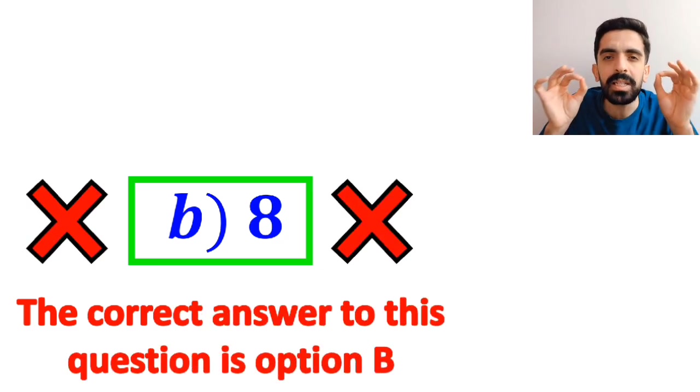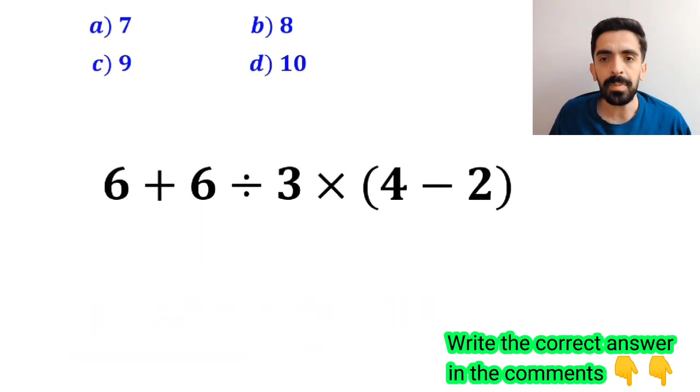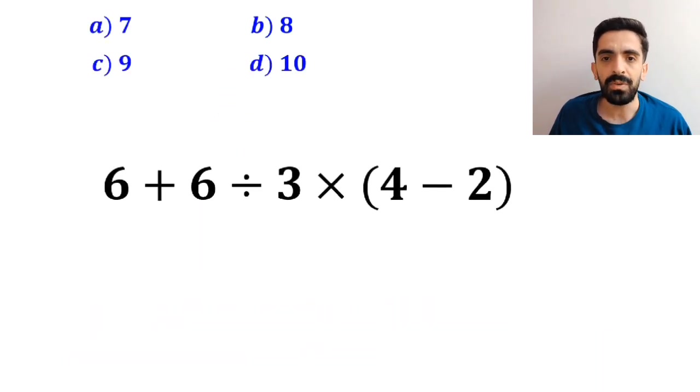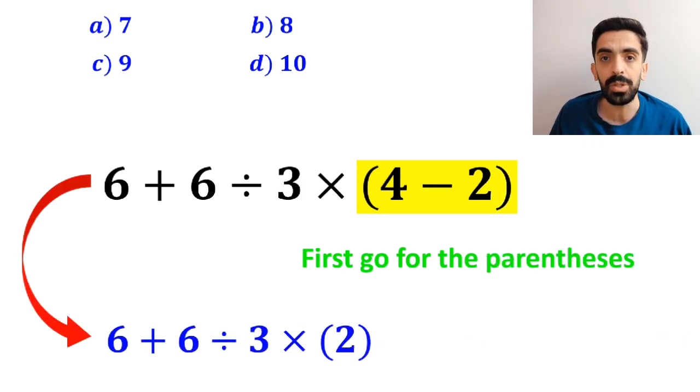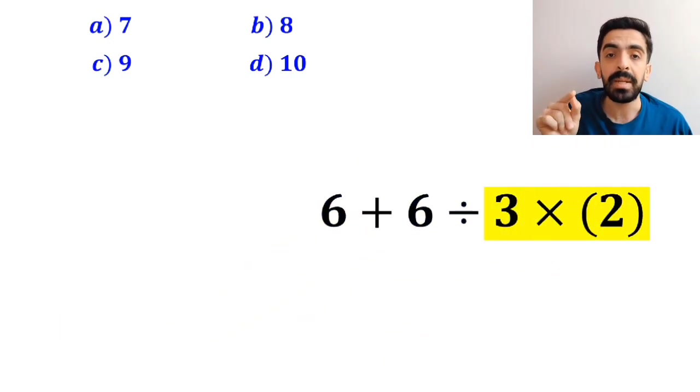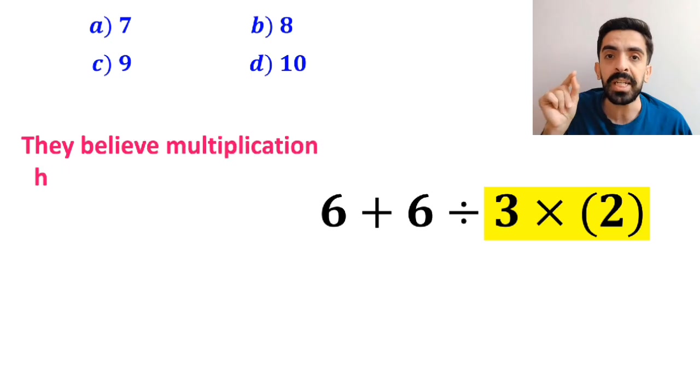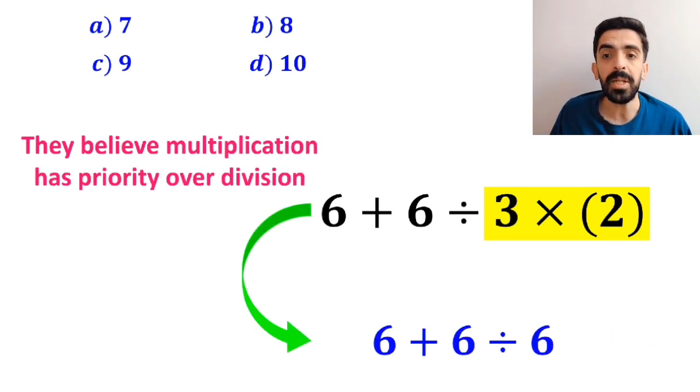But this answer is absolutely wrong. Also, some other people when solving this question first go for the parenthesis and write this expression as 6 plus 6 divided by 3 times 2. In the next step, they go for the multiplication between 3 and 2 because they believe multiplication has priority over division, so this expression simplifies to 6 plus 6 divided by 6.